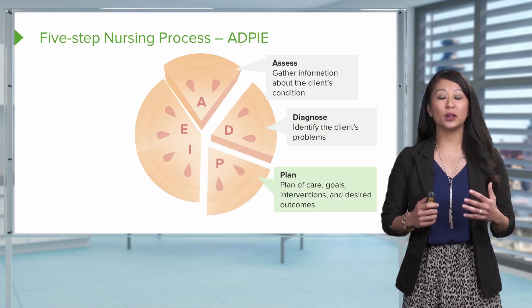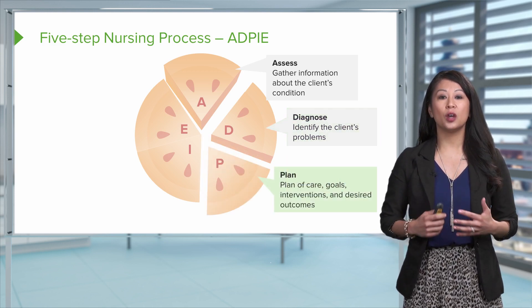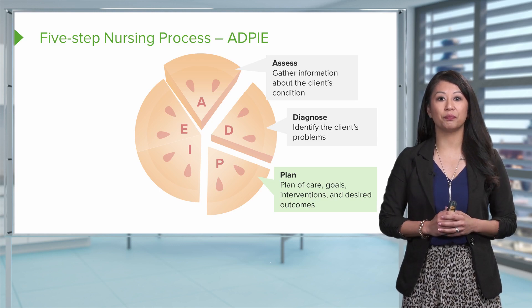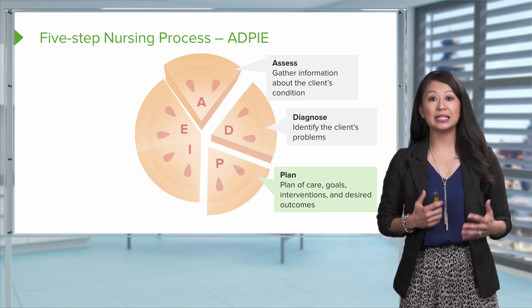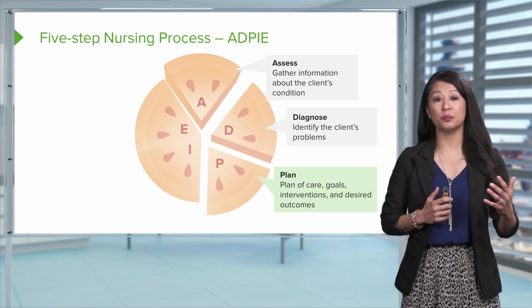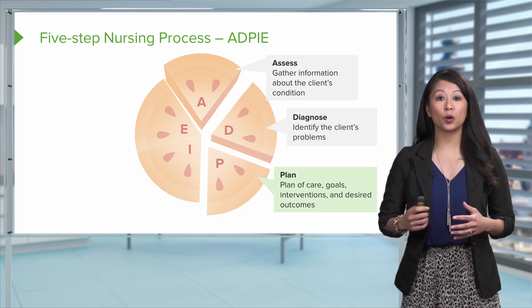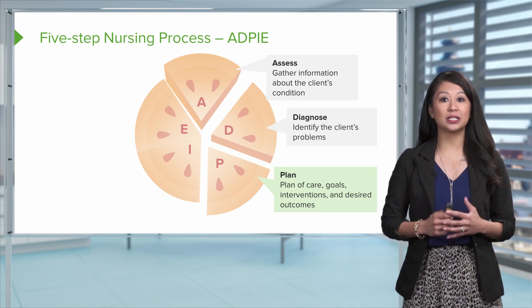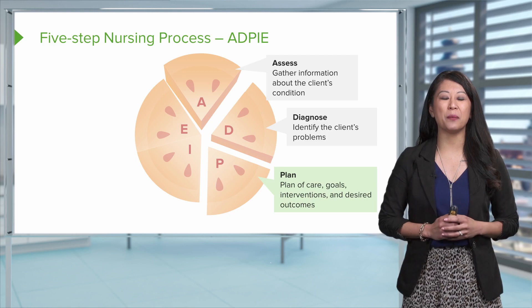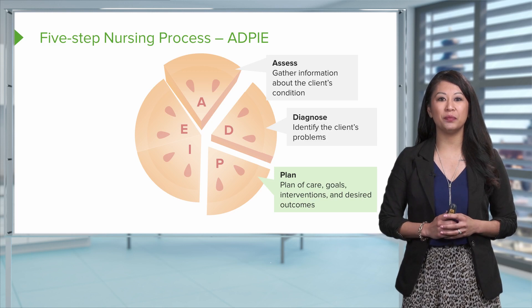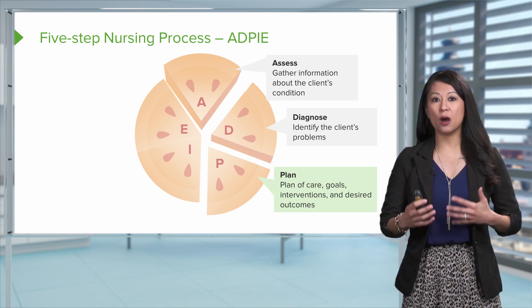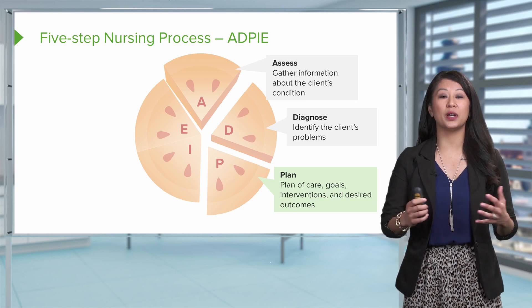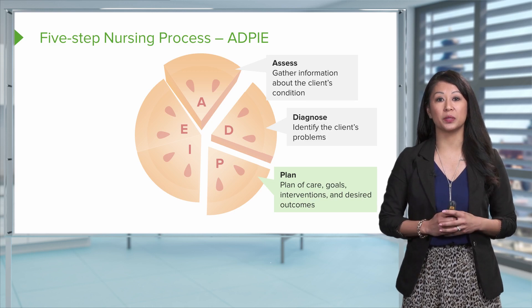Next, we're going to make a plan for our patients once we've identified that priority problem. The plan is going to look like a plan of care, goals for our patients, specific actions or interventions to help improve that patient outcome, and also set some outcomes for where we want our patient to get to and how much better we want them to be.